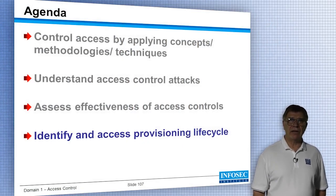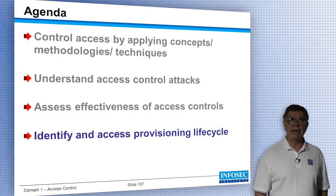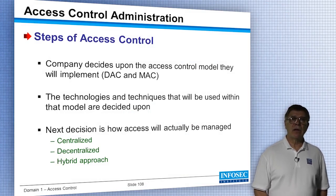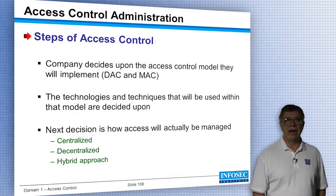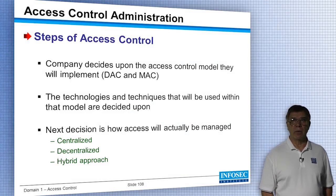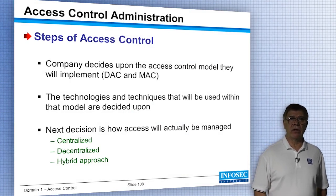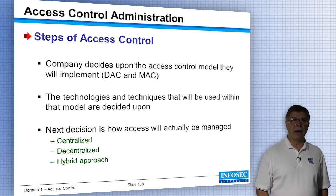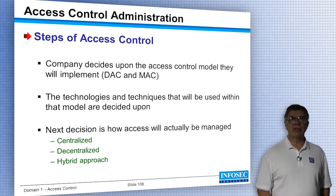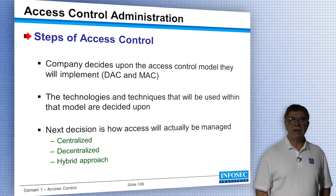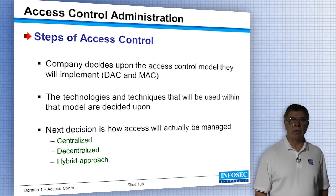Let's look at how we manage the whole access control process — identifying the lifecycle of access control. Your organization has to decide which access control model to implement, whether it's DAC, MAC, RBAC, RUBAC, or whatever. You would expect to find that in the security policy. Then the technologies and techniques to support that model need to be identified and put in place. Standards, policies, and procedures need to be developed.